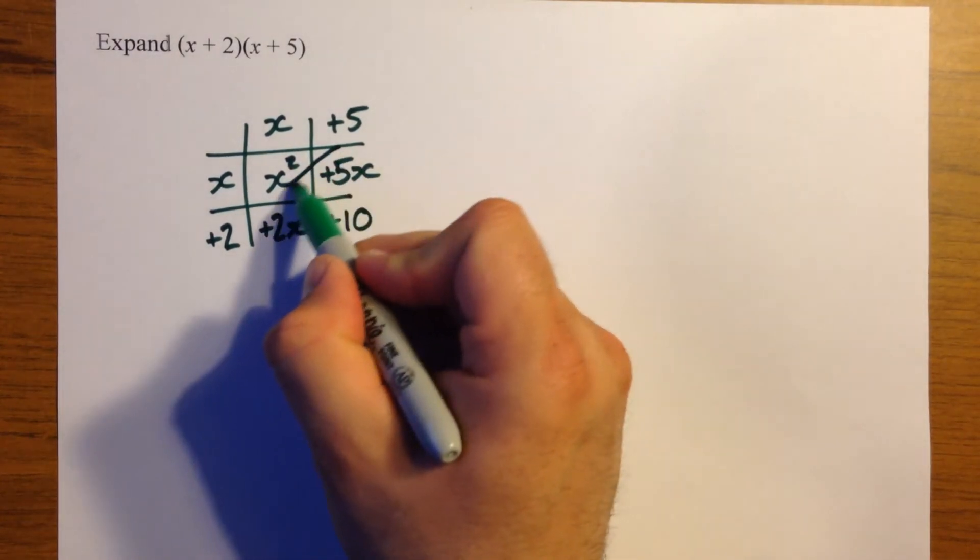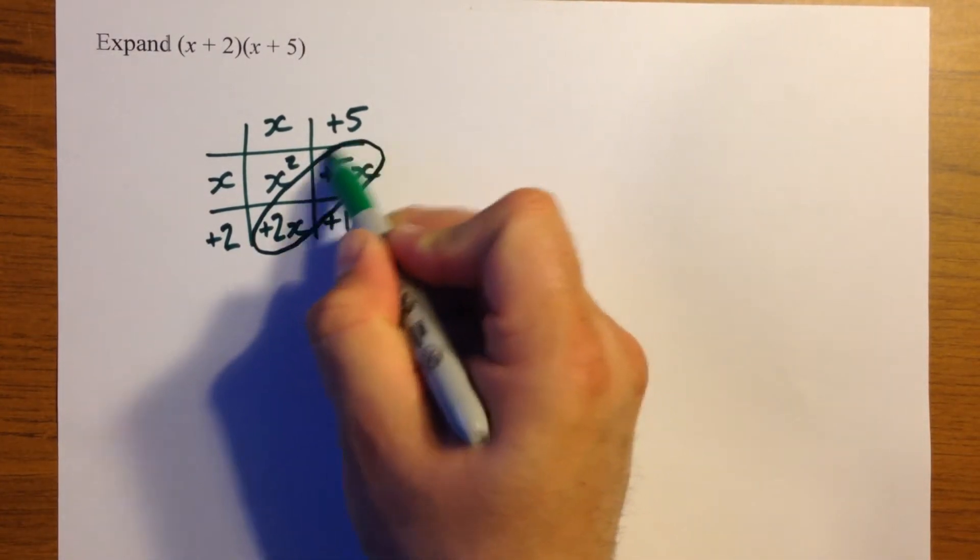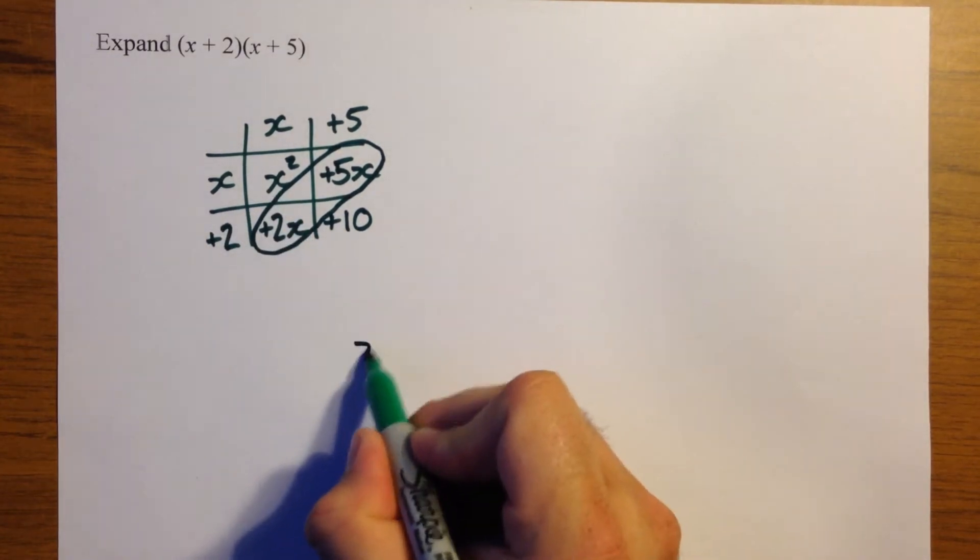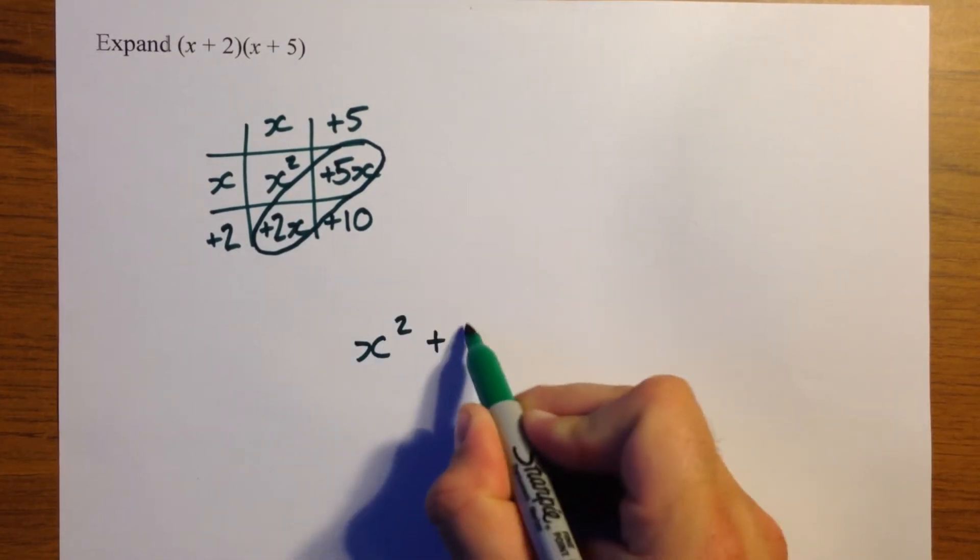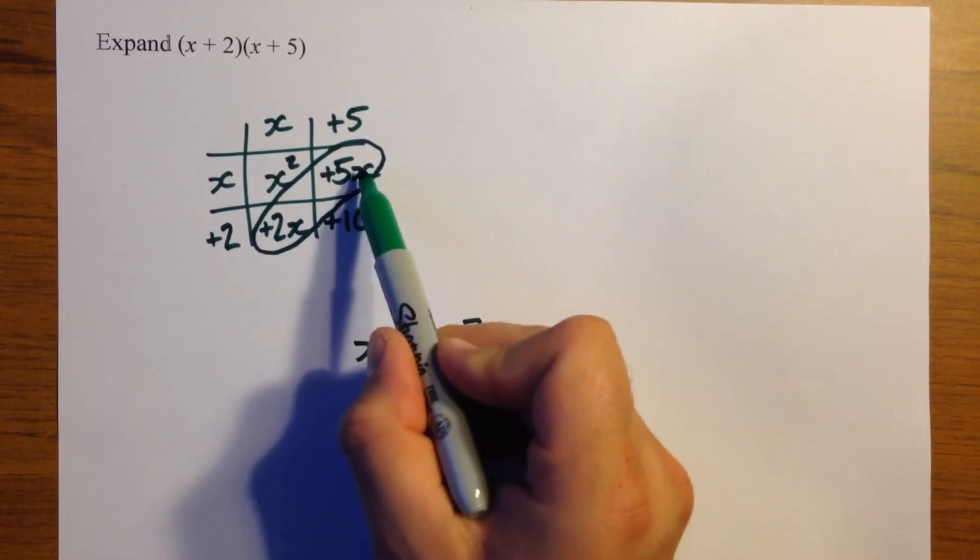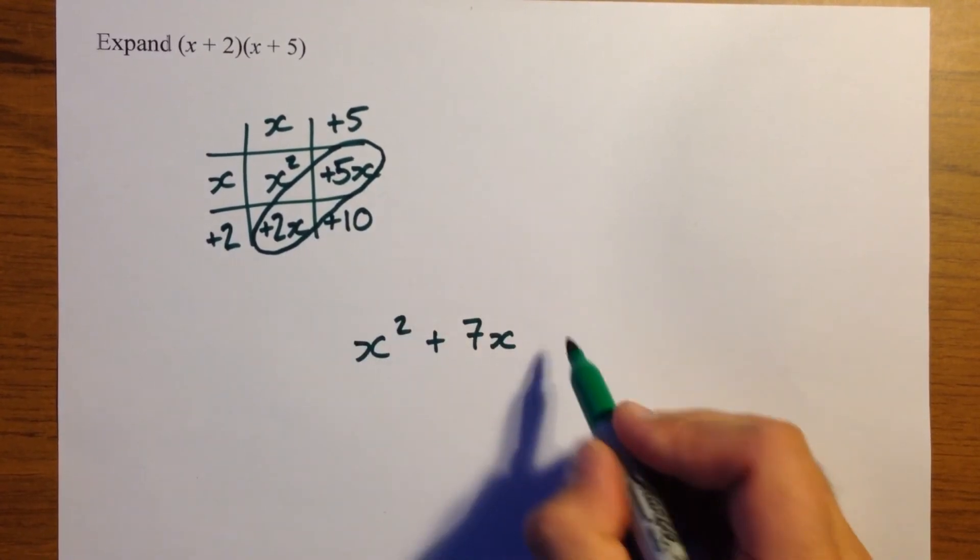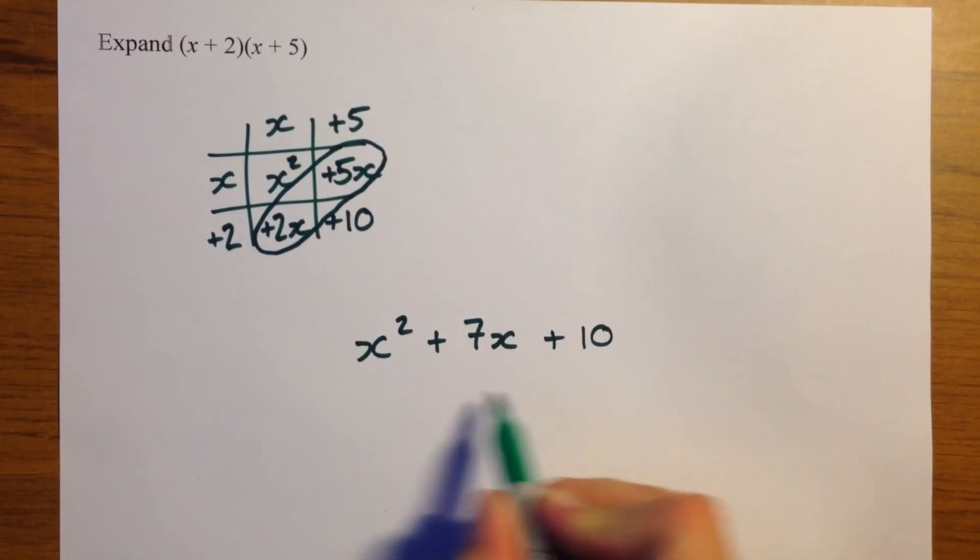Now you combine those two parts, so we get a final answer of x squared plus 7x, because 5x add 2x gives us 7x, and then plus 10.